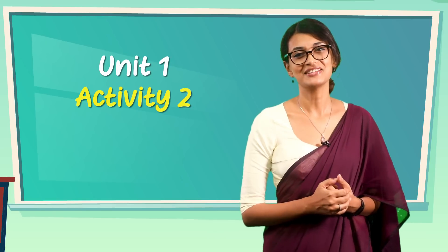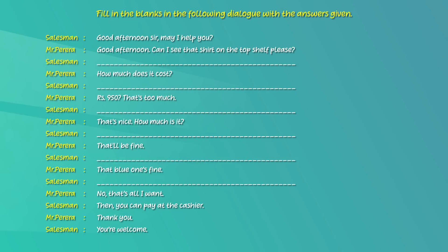Now that we have a brief understanding of the steps you need to follow when writing a dialogue, keeping all of this in mind, let's attempt to complete a few dialogues that are found in your English workbook. Please turn to Unit 1, Activity 2. The answers are given, so you just have to fill in the blanks with the right phrases. It might help to briefly go through the answers first.